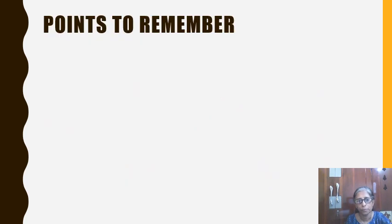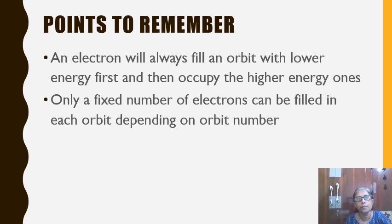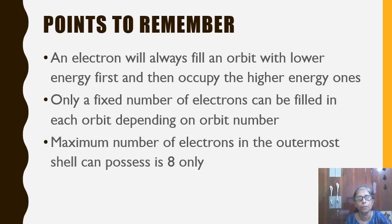Now the points to remember: first, an electron will always fill an orbit with lower energy first and then occupy the higher energy ones. Second, only a fixed number of electrons can be filled in each orbit depending on the orbit number. Third, the maximum number of electrons in the outer shell is 8 only.